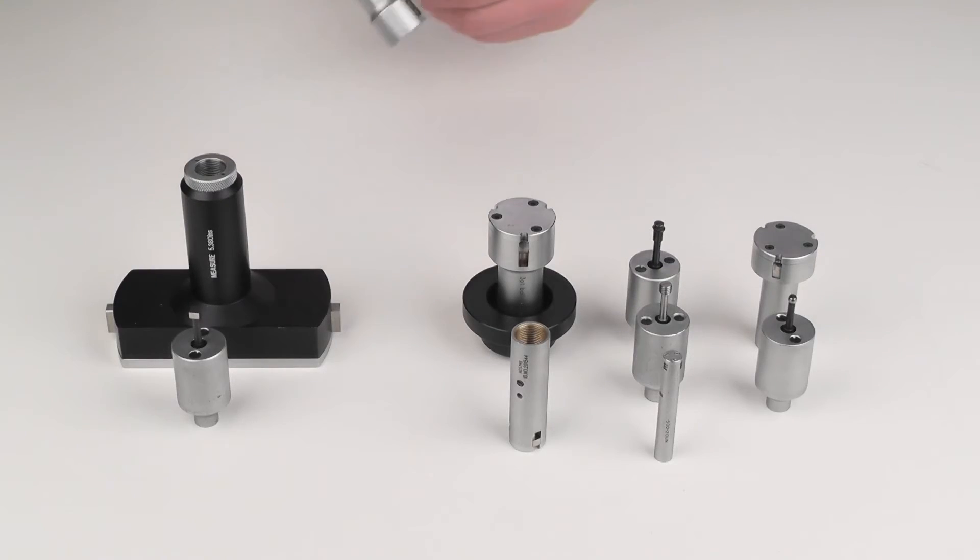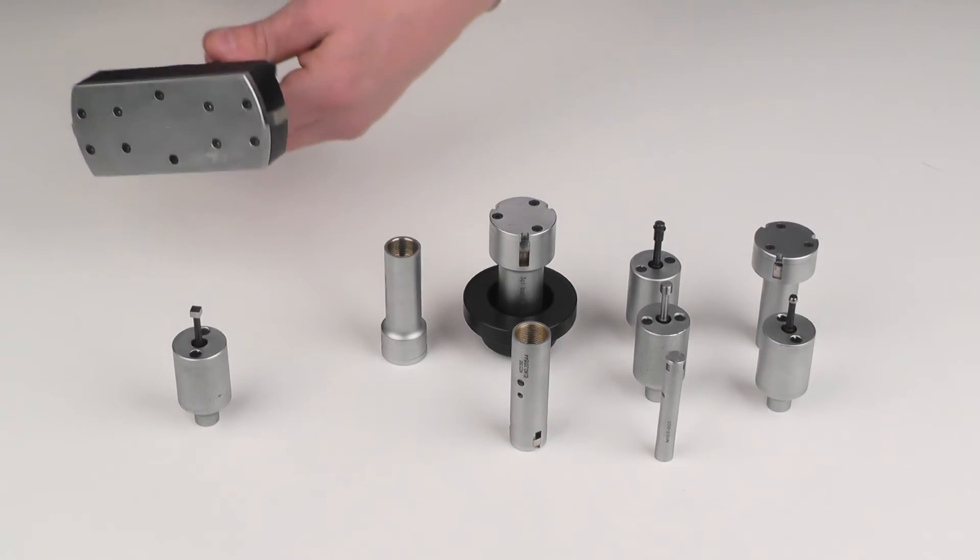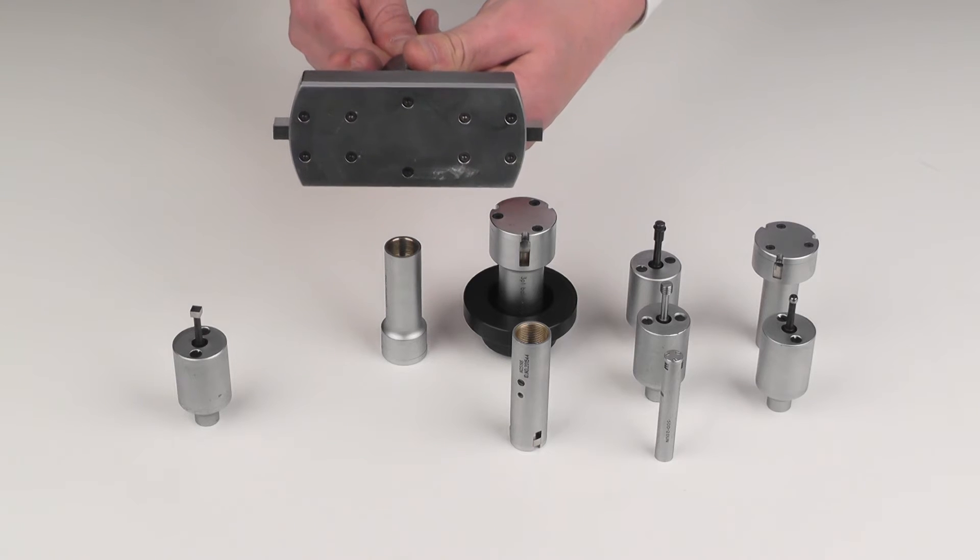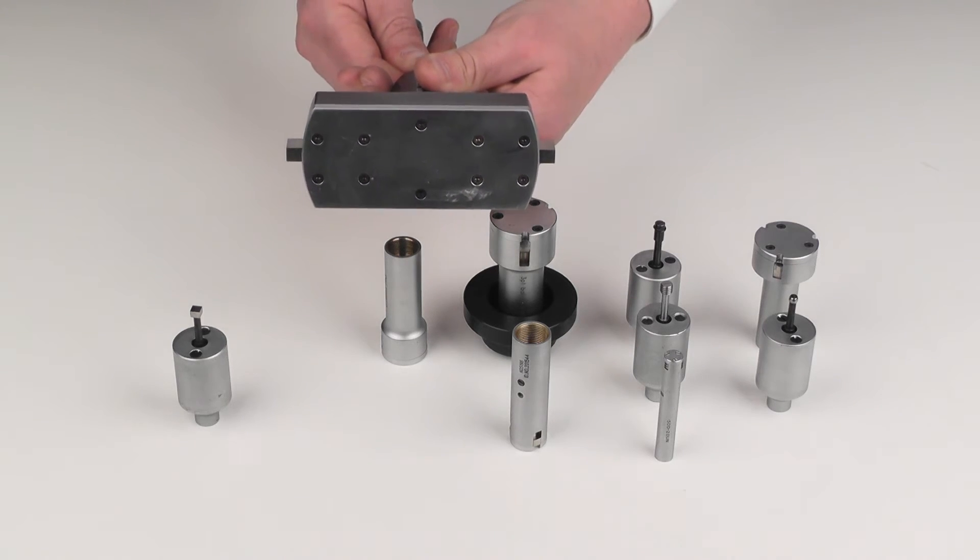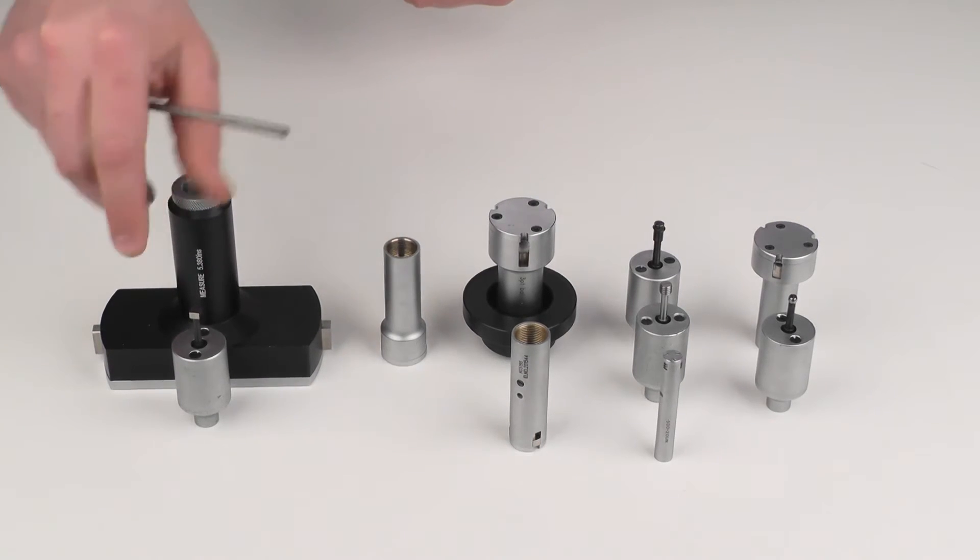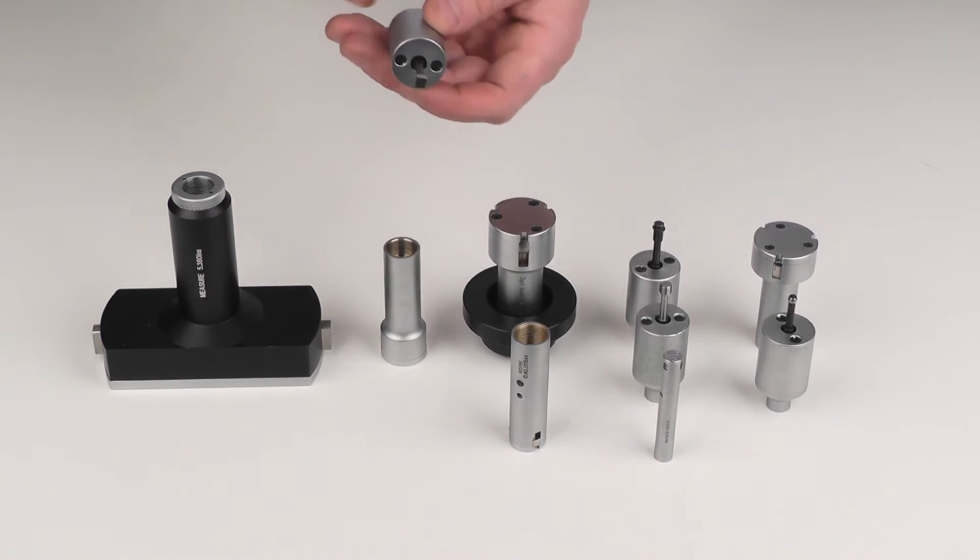And then for slot widths, you would have a square anvil and just two opposing anvils to check the width of a slot. Here we have a very large slot and then a much smaller one intended for, say, a keyway on a drive shaft.